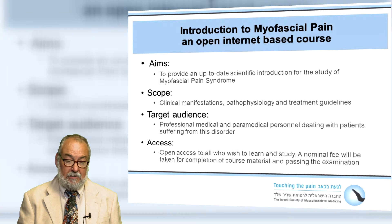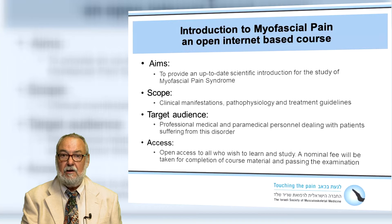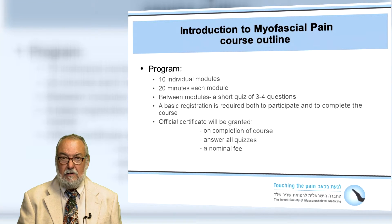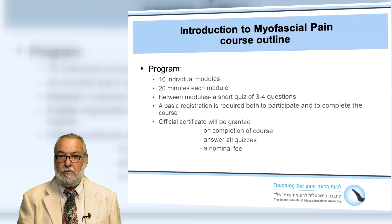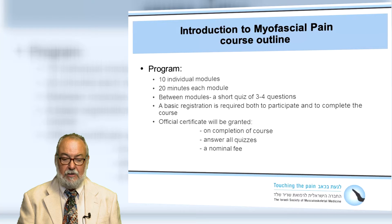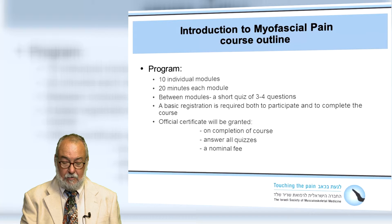A nominal fee will be taken for completion of course material, passing an examination, and receiving a certificate. The program involves ten individual modules, each of approximately 20 minutes long. Between the modules there is a short quiz of three to four questions. Basic registration is required both to participate and to complete the course, and an official certificate will be granted on completion of course material, answering all the quizzes, and a nominal fee.